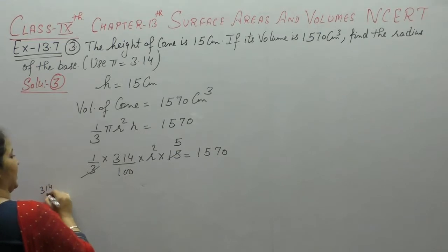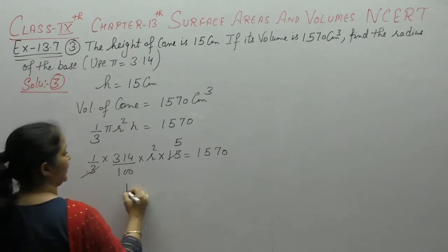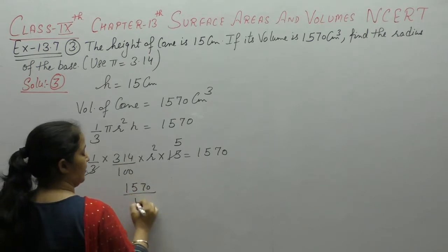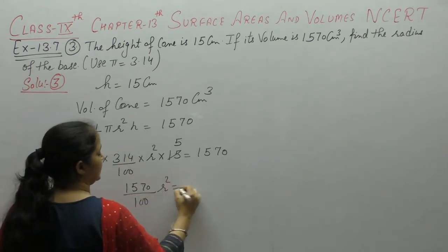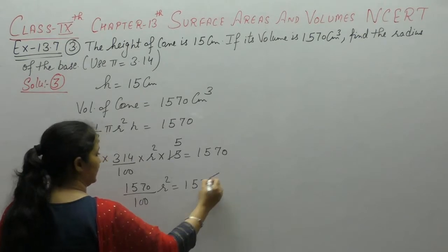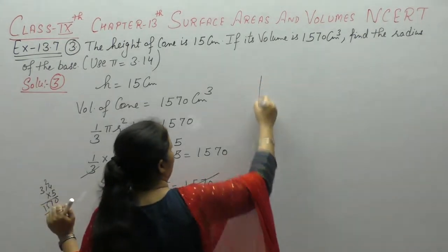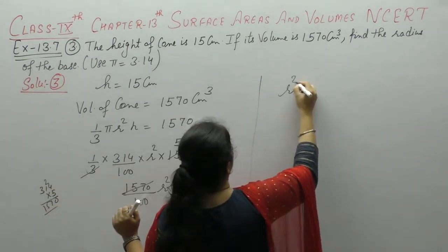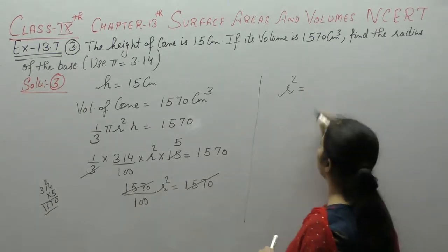314 ko 5 se multiply kareenge, 1,570 upon 100 r square, 1,570, ye cancel ho gya, r square humarhe paas kya aya, 100 uza za ke 1 se multiply ho ga, 100.